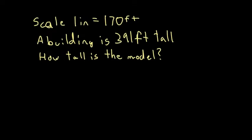Given the scale this time: one inch equals 170 feet. The building is 391 feet tall, how tall is the model? So here you have to think of your scale. I have a lot more feet than I have inches, so in order to solve this, I'm going to have to divide because I'm given 391 feet. To make it smaller, I need to divide, so I need to take 391 and divide it by 170.